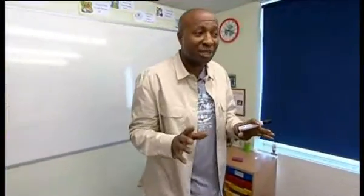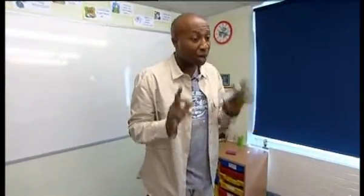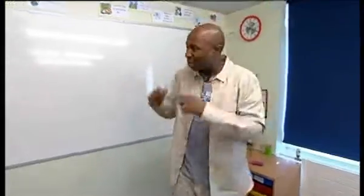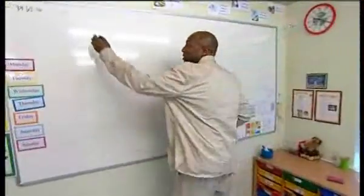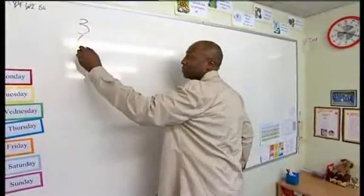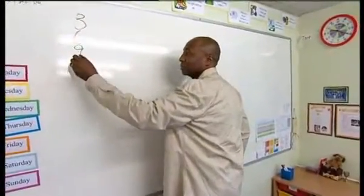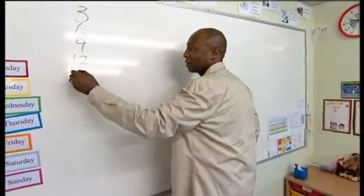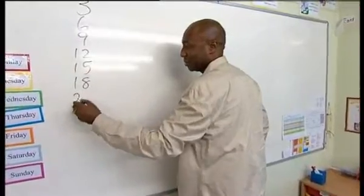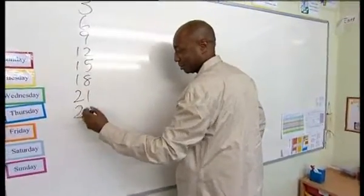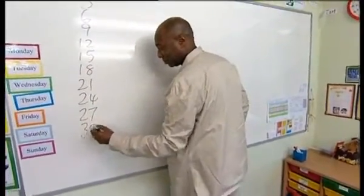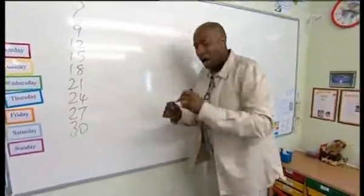Do all of you know your three times tables? Yes. Are you sure? Yes. Right, can we quickly go through it, please? Three. Six. Isaac Anoum, Mr Numbervater, was invited into Mount Pleasant Lane School to take a Year 4 class in problem solving.